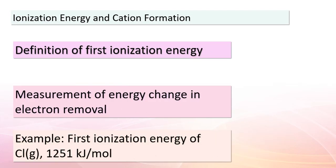Today, we're going to explore ionization energy in depth. The first ionization energy is a crucial measure of the energy change that occurs when an electron is removed from an atom, resulting in the formation of a cation. For example, consider chlorine, with a first ionization energy of 1,251 kJ/mol. This represents the energy change when Cl(g) loses an electron to become Cl⁺(g). The electron configuration of chlorine changes from [Ne]3s²3p⁵ to [Ne]3s²3p⁴ in this process.